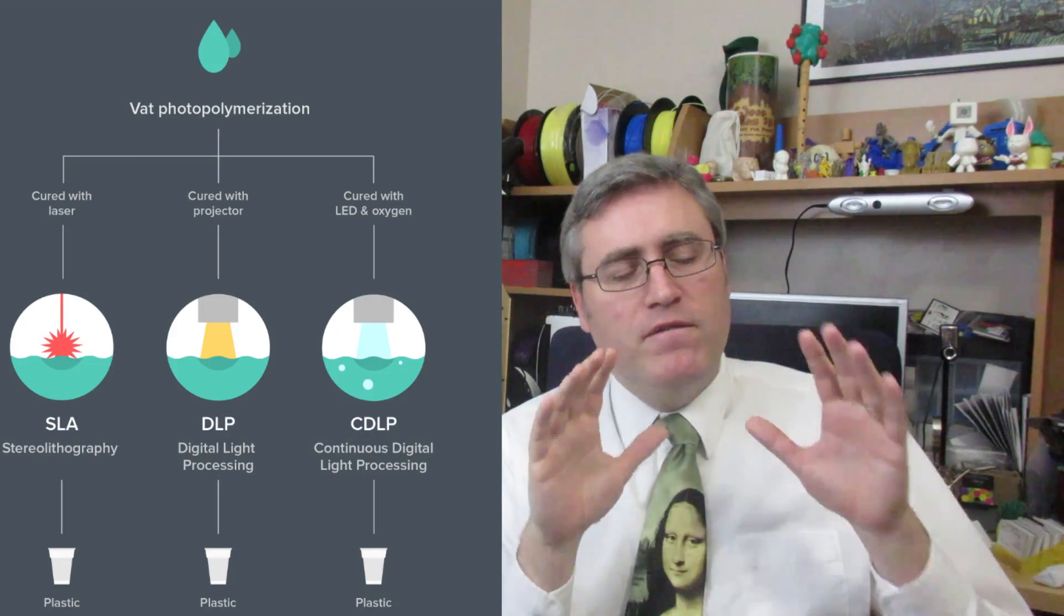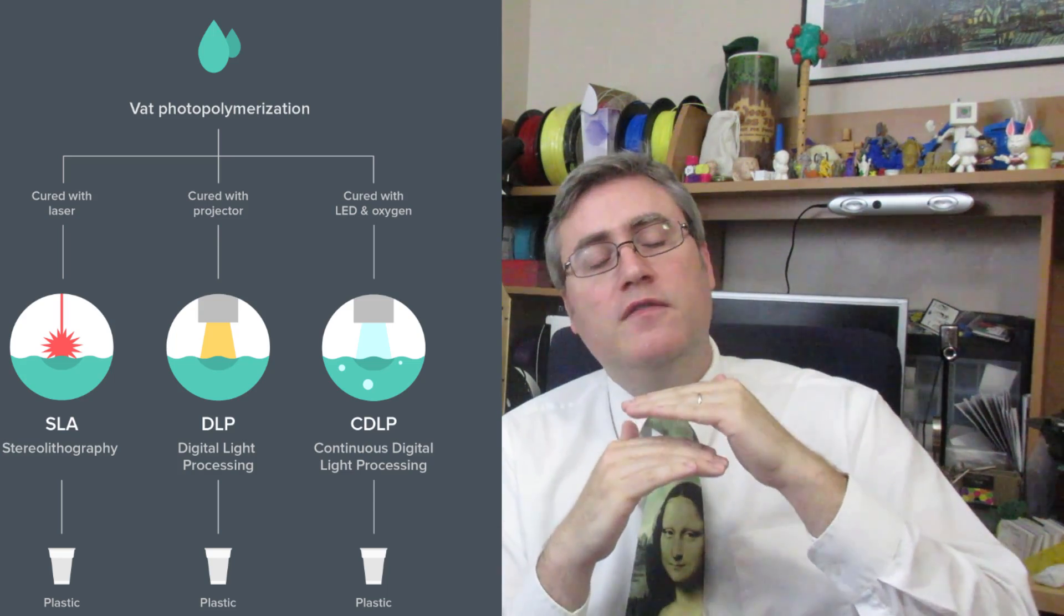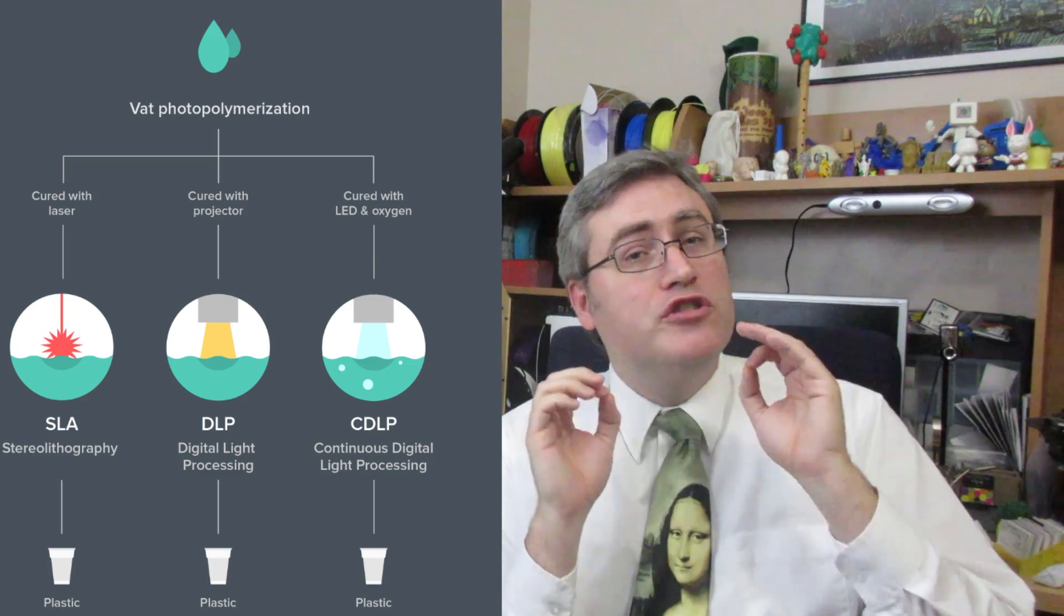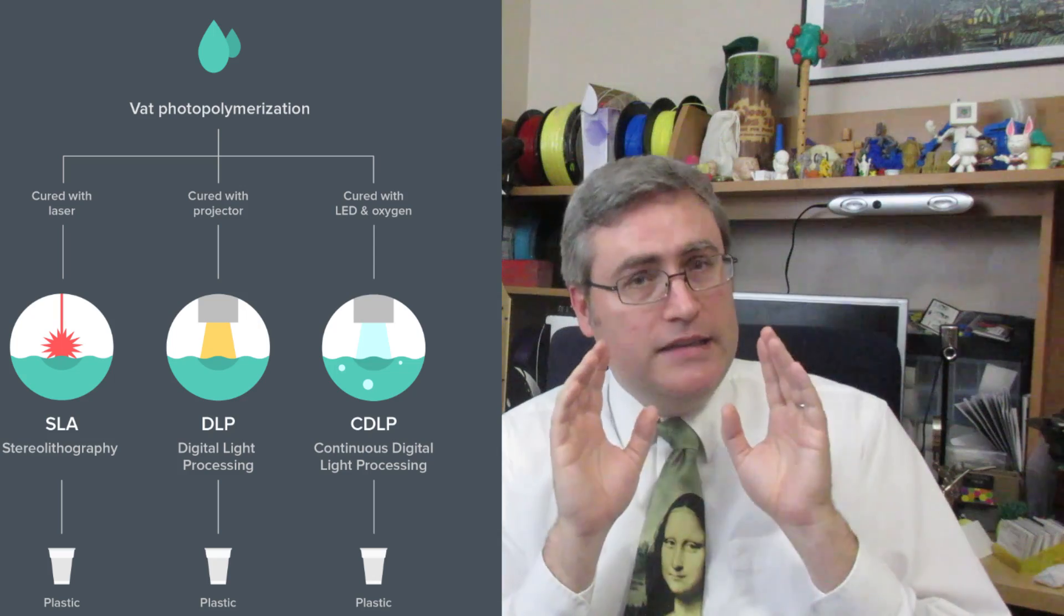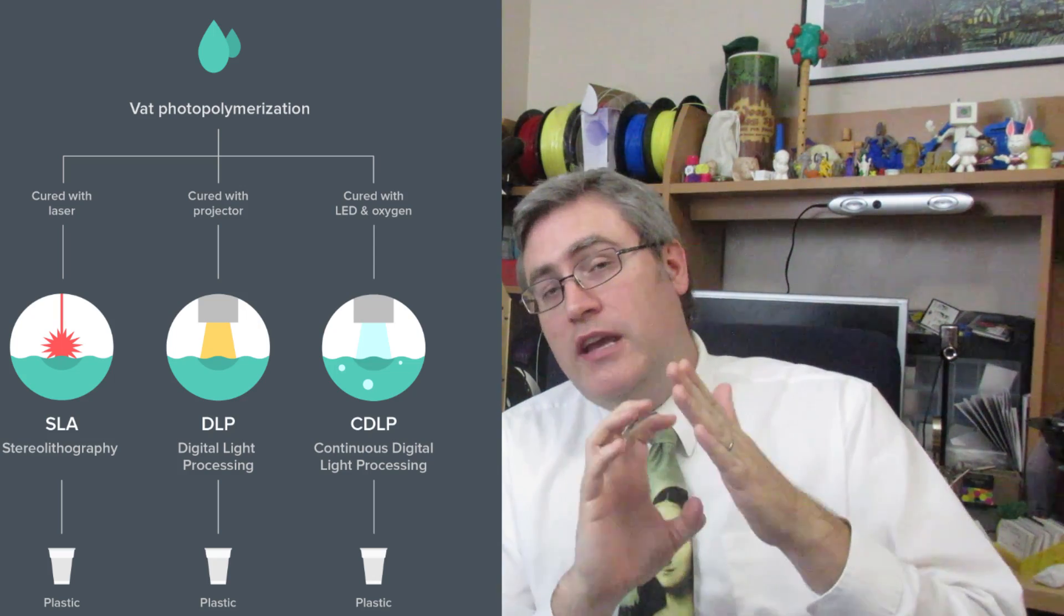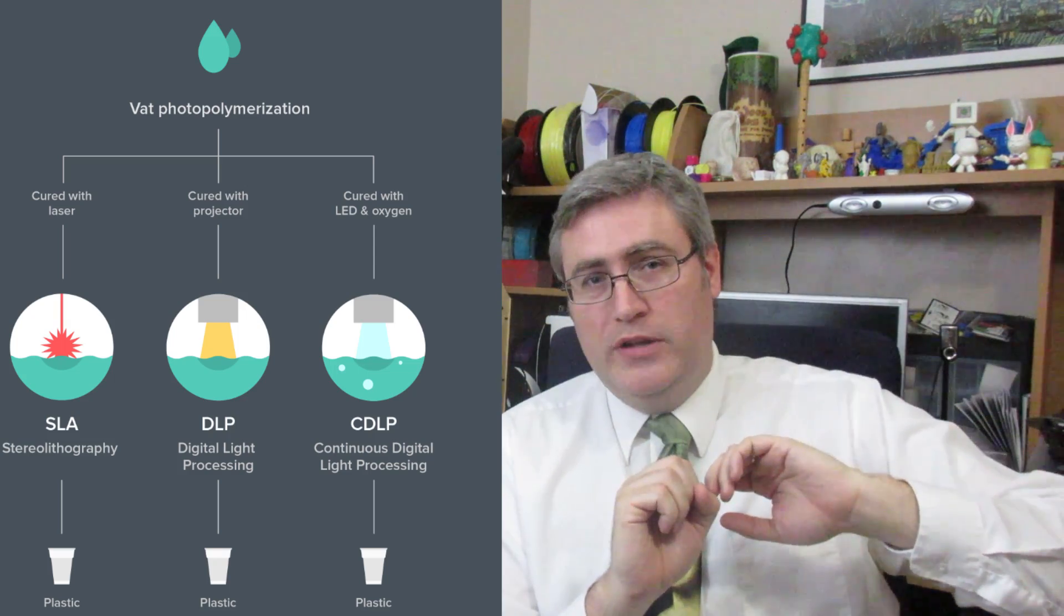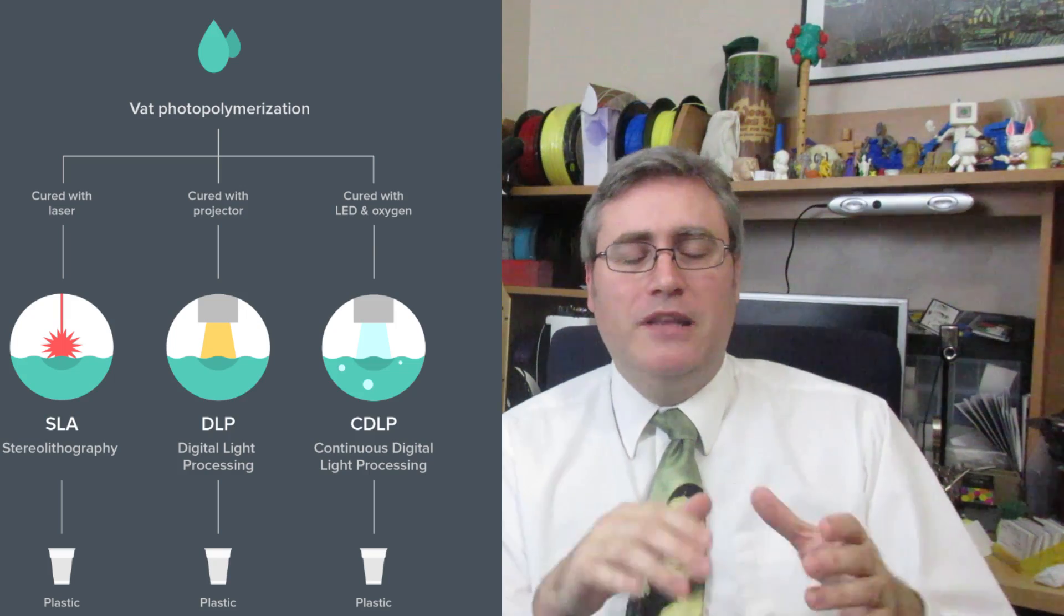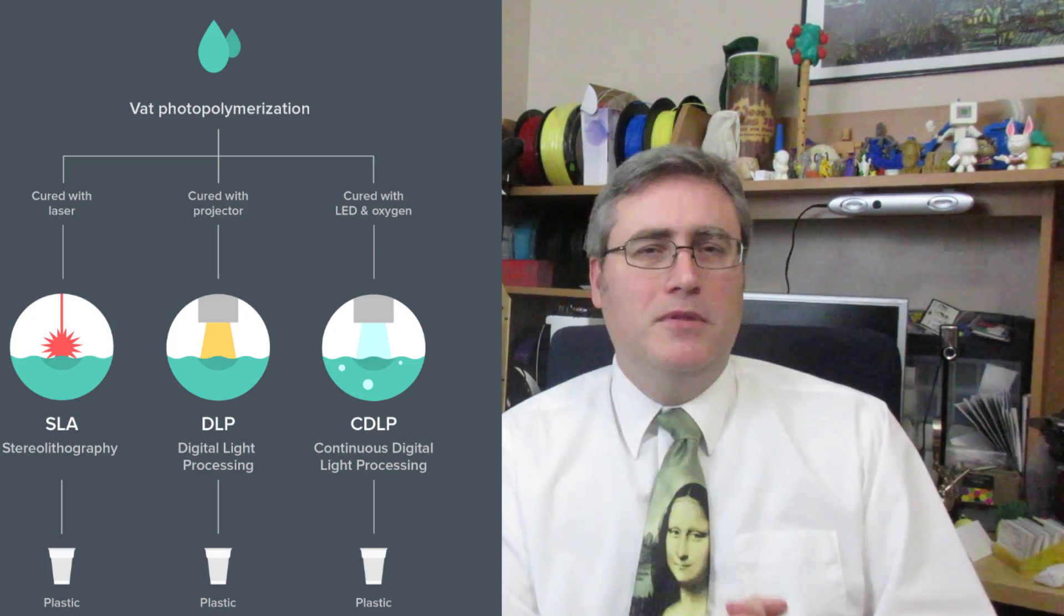So let's start our discussion with vat polymerization. Vat polymerization was the first 3D printing process created, and it describes a process where you have a vat of liquid that turns solid when exposed to UV light, and then exposing that to UV light in selective ways, and then pulling that print out and changing the light layer by layer to make sure that you create each layer of your object as you pull it out. Now there are a couple of different ways to do this, but they all fall under that same basic idea, and they're used by a couple of different companies.